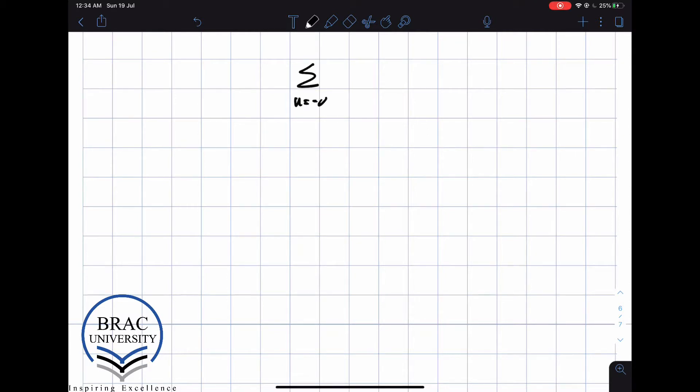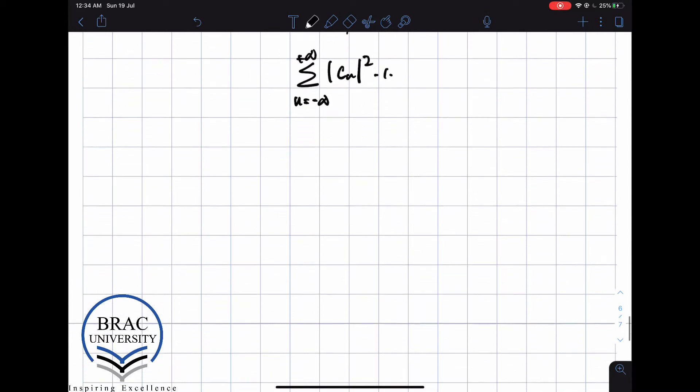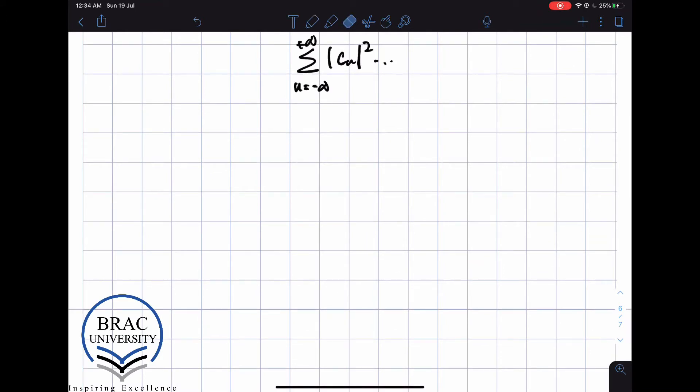This is n going from minus infinity to plus infinity, and we have c_n squared. But this is multiplied by 1. But 1 is essentially the interval, the size of the interval in n. So we can rewrite that as delta n.